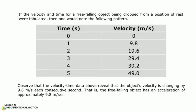At time 3 seconds, the velocity is 29.4 meters per second. At time 4 seconds, the velocity is 39.2 meters per second. At time 5 seconds, the velocity is 49.0 meters per second. Observe that the velocity-time data above reveal that the object's velocity is changing by 9.8 meters per second each consecutive second. That is, the free falling object has an acceleration of approximately 9.8 meters per second per second.